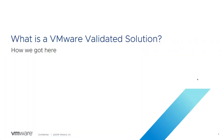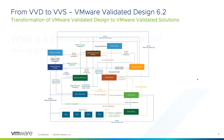To begin, let's take a brief look at what a VMware Validated Solution is and how we got here from VMware Validated Designs. First, let's take a quick look at this complex diagram that describes the VVD 6.2 architecture. As you can see, there are a number of components here, all of which are interdependent to one degree or another.